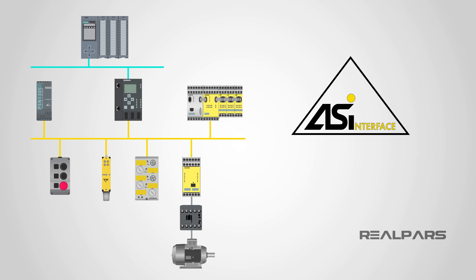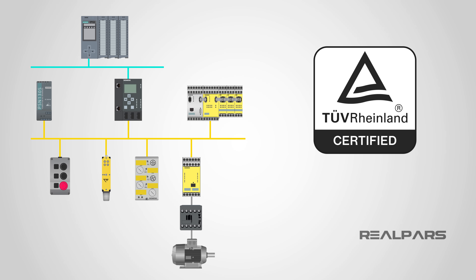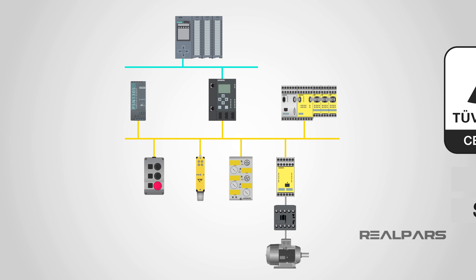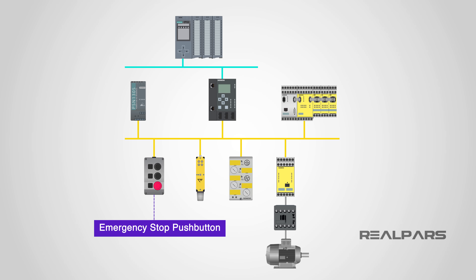AS Interface can also be used in safety systems. ASI Safe, or ASI Safety at Work, is a standard AS Interface network but with special ASI Safe components. An ASI bus system is TUV certified up to performance level E, or PL-E, or Safety Integrity Level 3, or SIL 3. An advantage of ASI Safe is that components can be connected directly to the AS Interface network, such as emergency stop push buttons or safety door contacts.